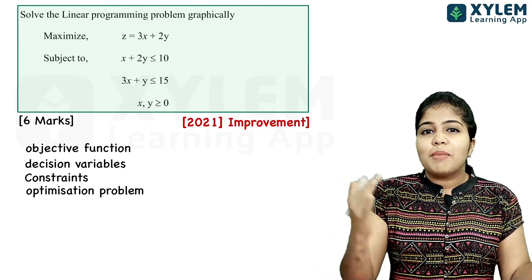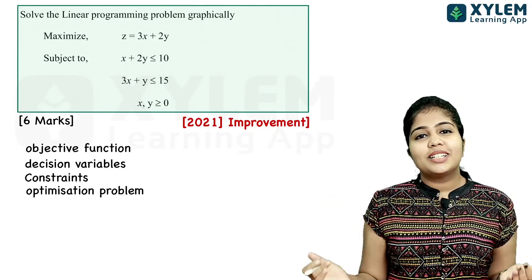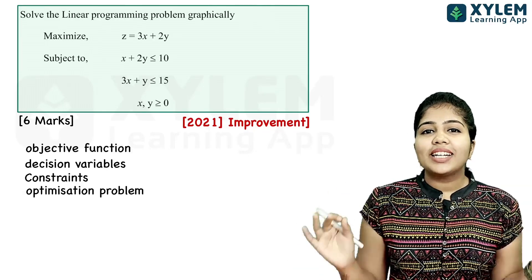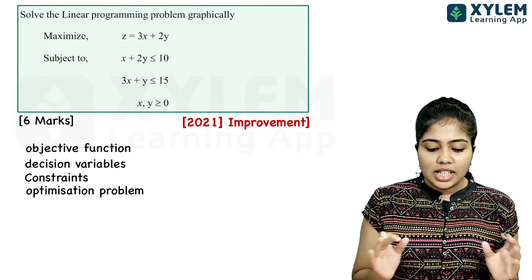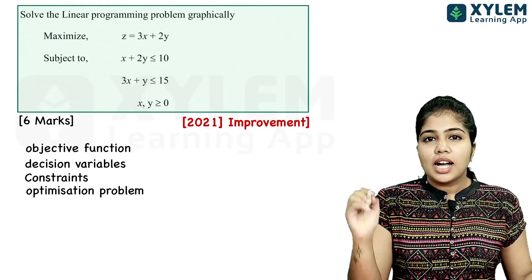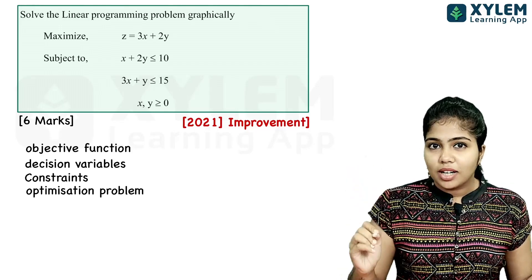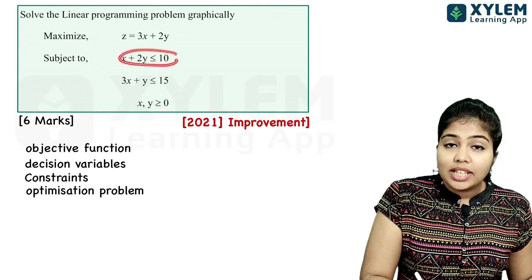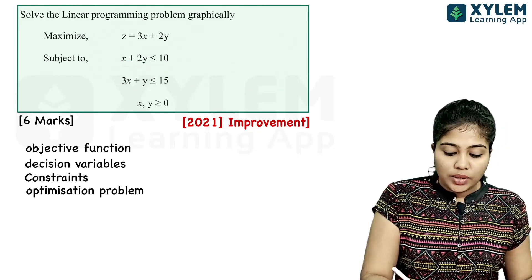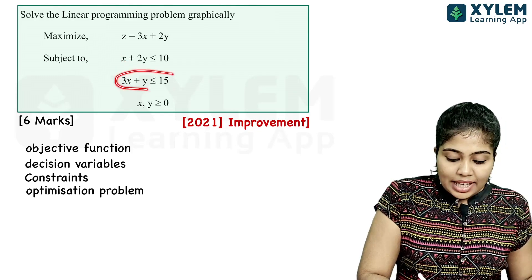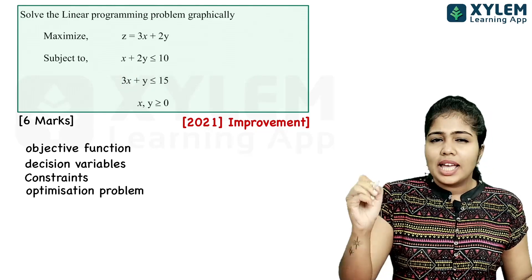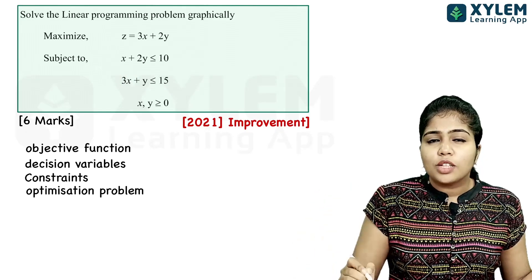This is our optimization problem — we optimize by maximize or minimize. In this problem, we have to maximize. The constraints are: x plus 2y less than or equal to 10, 3x plus y less than or equal to 15, x, y greater than or equal to 0.